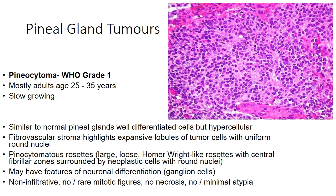Pineocytoma is a WHO grade 1 tumour which typically occurs in adults in the age group of 25 to 35 years. It is a slow-growing tumour that simulates a normal pineal gland, with well-differentiated but typically hypercellular cells. The fibrovascular stroma highlights expansile nodules or lobules of tumour cells with uniform round nuclei. There is a characteristic pineocytomatous rosette, a loose large Homerwright rosette, with a central fibrillar zone surrounded by neoplastic cells. Neuronal differentiation may be present as ganglion cells, with a non-infiltrative growth pattern, no or rare mitosis, and no necrosis.